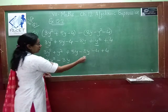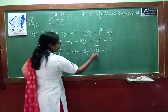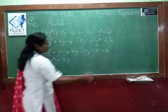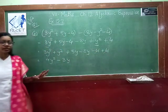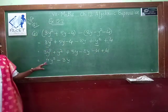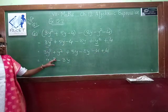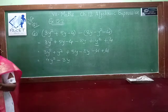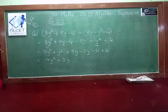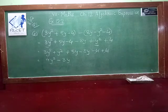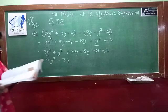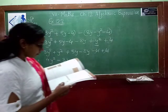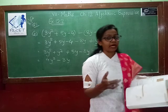Minus 4 plus 4 will cancel each other, so you are getting only 0. So the answer is 4y² minus 3y. This way we can solve question number 6.